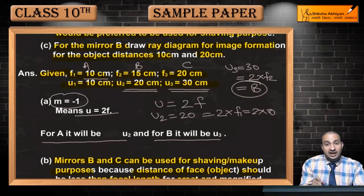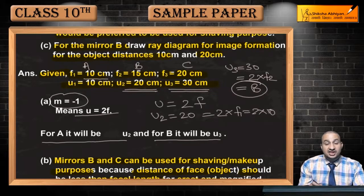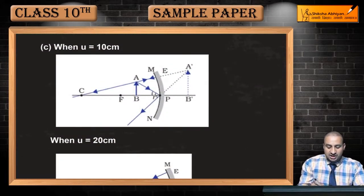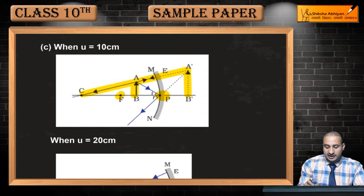Aur dusre case mein focal length or center of curvature ke beech mein jab object hogi, tab kaisi image banegi? To iske liye main aapko bata deta hoon. As you can see, jab object jo hoti hai focus or pole ke beech mein hoti hai, to jo banegi yahaan par image wo virtual or erect banegi. As you can see, A dash, B dash.